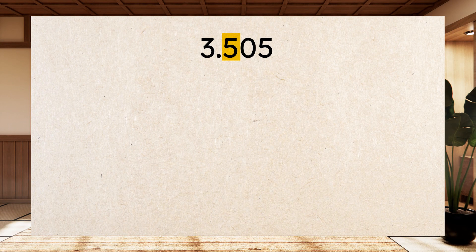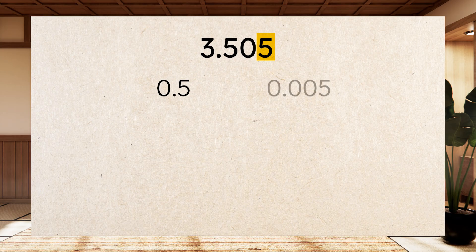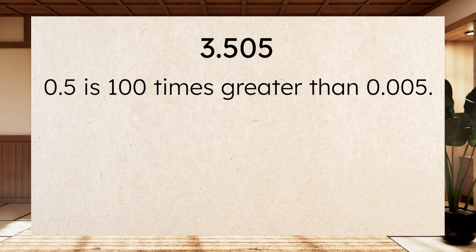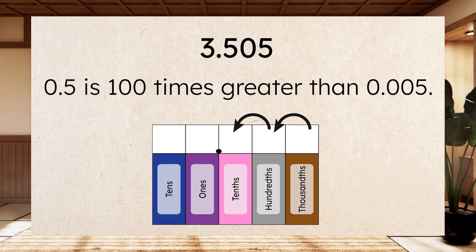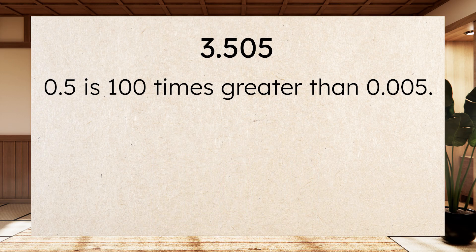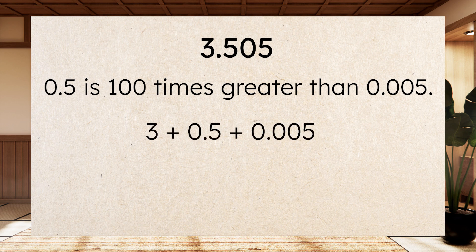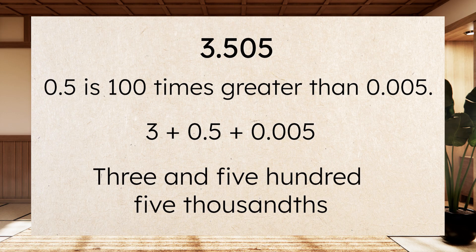The first five is in the tenths place, so its value is five tenths. The other five is in the thousandths place, so its value is five thousandths. Five tenths is one hundred times greater than five thousandths, because tenths are two places to the left on the place value chart from the thousandths. This number can also be written in expanded form as three plus five tenths plus five thousandths. In word form, it's recorded as three and five hundred five thousandths. Great job, Math Masters! You solved the Math Mastery Dojo Challenge and earned your next badge!